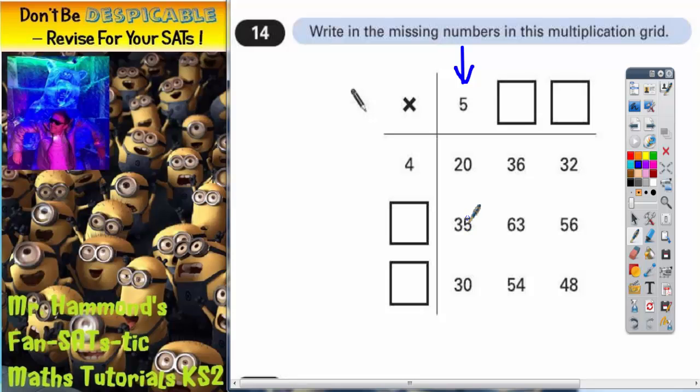how many times do we times 5 by to make 35? Well, if you know your five times table, you should know that it is 7 times 5 is 35. This one, how many times do we times 5